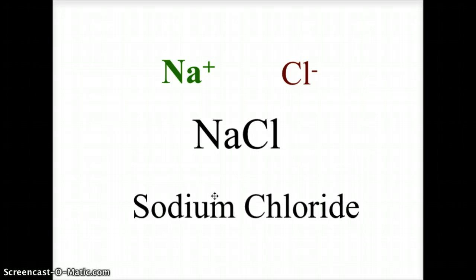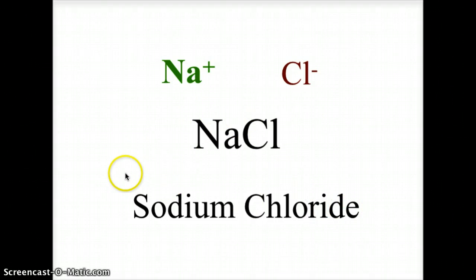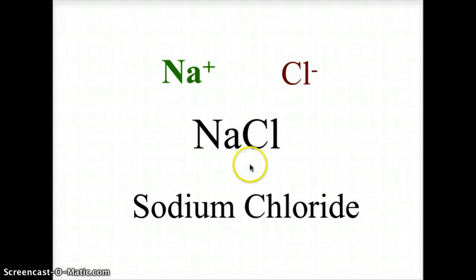This becomes sodium chloride — also known as table salt, the same salt you put on your french fries. Whenever you name an ionic compound, the metal keeps its name and the nonmetal takes on the suffix '-ide.' This is always the case for binary compounds — compounds created by only two elements. Since we only have sodium and chlorine, we have a binary compound: sodium chloride.